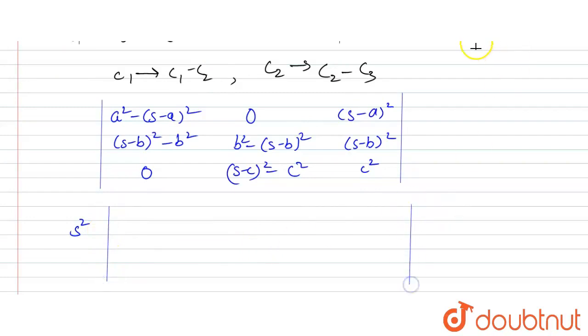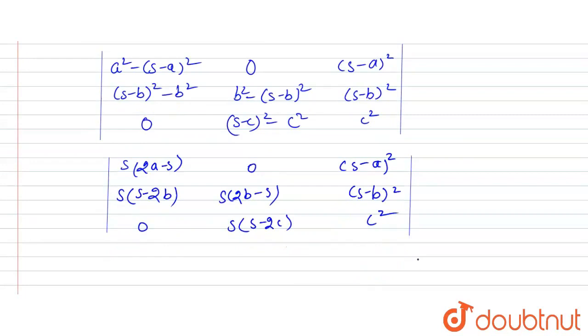Try to solve this equation, apply the identity and solve. So it will be: 2a minus s, s minus 2b, zero; zero, 2b minus s, s minus 2c; and it will be the same, c squared. Now,